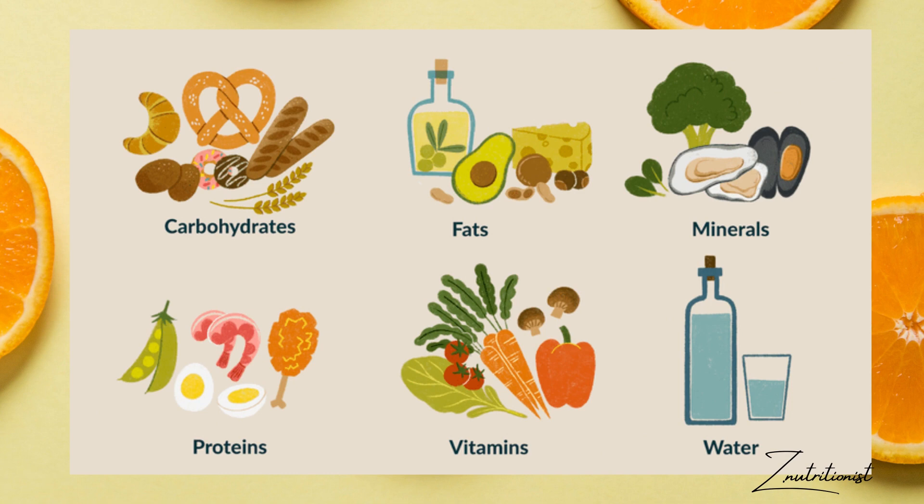The main important nutrient groups present in our balanced diet or on our plate are carbohydrates, fats, minerals, proteins, vitamins, and water. Carbohydrates include bread and wheat; fats include avocados and olive oils; minerals are present in many vegetables; proteins include egg and meat; vitamins are found in many fruits and vegetables; and water is very important for us to stay hydrated.